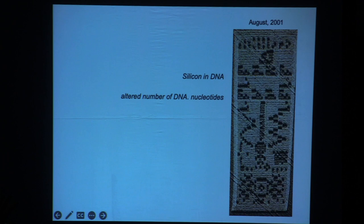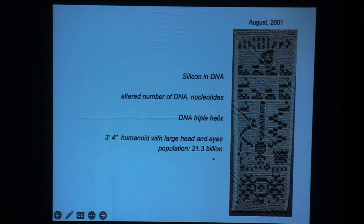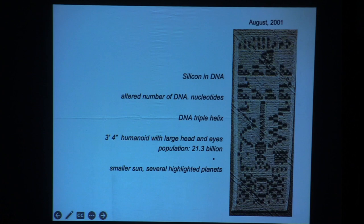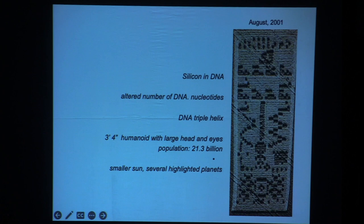Notice also there's what looks like a humanoid — a representation of someone with eyes, nose, and a mouth — and then their own diagram giving us information about them. There is silicon as well as carbon in their DNA. If you accept this as a legitimate communication: they have an altered number of DNA nucleotides, their DNA has a triple helix not a double helix, humanoids are three foot four inches — smaller than us — with large heads and eyes, their population is much larger than ours at 21.3 billion, they have a smaller sun, and several highlighted planets instead of just one. At the bottom, arranged horizontally, is their device — not a radio telescope, but perhaps a representation of what is sending us the message. There you have it.